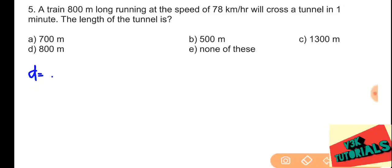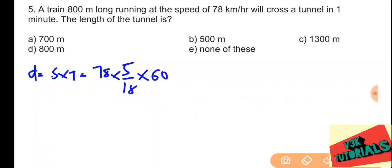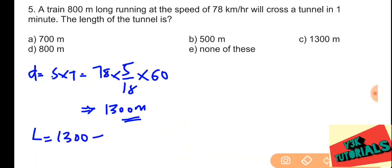Distance equals speed into time. Speed is 78 km/h converted to meters per second by multiplying with 5 by 18, then multiplied by 60 seconds: this gives 1300 meters total distance. Tunnel length equals total distance minus train length: 1300 minus 800 equals 500 meters. So option B is the correct answer.